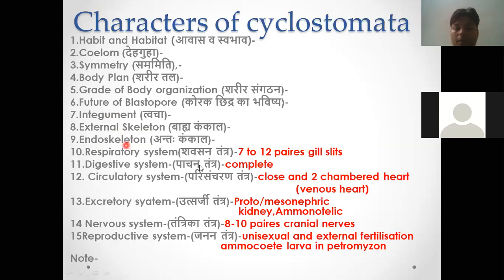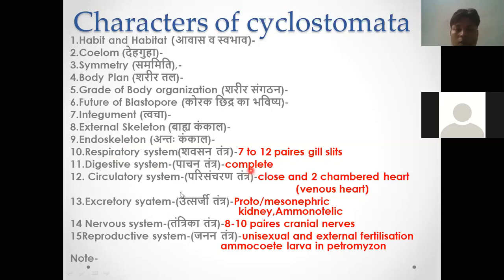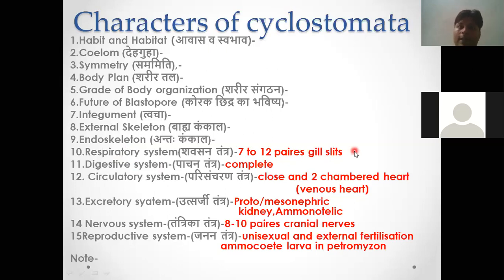In the respiratory system, gill slits are present — seven pairs of gill slits which are helpful in respiration. The digestive system is complete, from mouth to anus. The circulatory system is a closed type with a two-chambered heart. It is called a venous heart because the blood passing through it is deoxygenated blood.